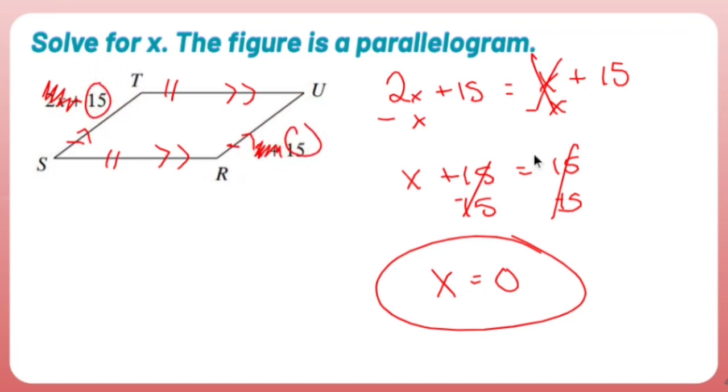So zero is the correct answer because the math ends up the way it's supposed to. So that's how you do it.